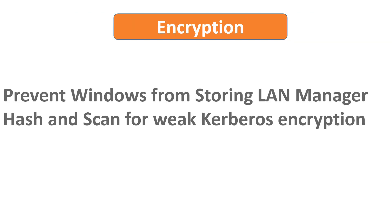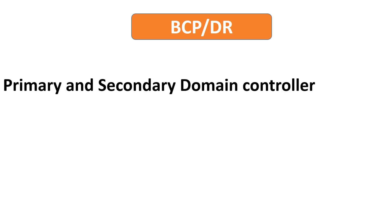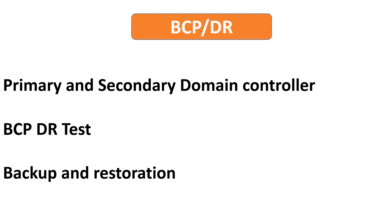Point No. 8: Encryption. Since LM hash is weak and prone to hacking, ensure the server does not store LAN manager hashes of the passwords in the local Security Accounts Manager (SAM) database or Active Directory. Also scan for weak Kerberos encryption. Point No. 9: BCP/DR. Ensure primary and secondary domain controllers are implemented and replication happens successfully. Check and verify that a disaster recovery site is in place and business continuity process is implemented and tested regularly. Finally, check and verify that Active Directory backup is taken regularly and restoration testing is performed.